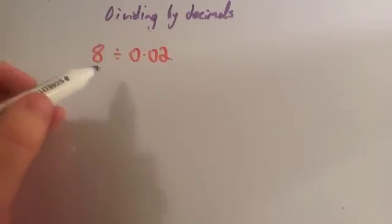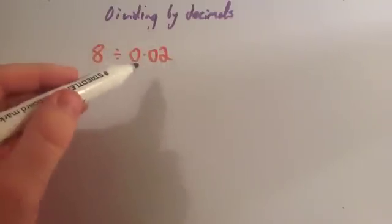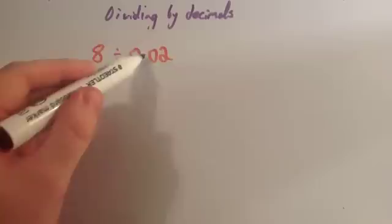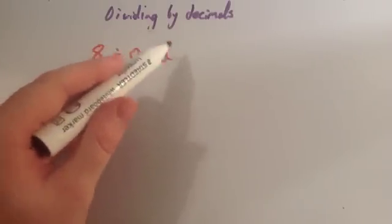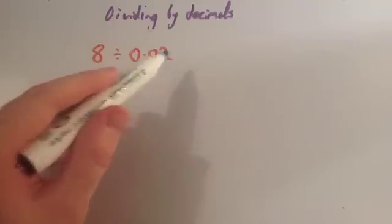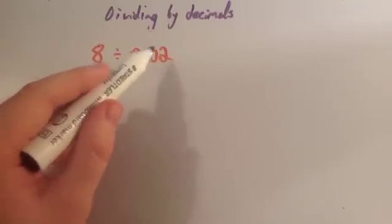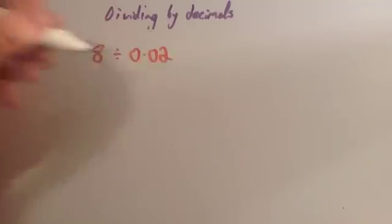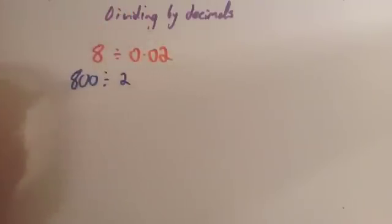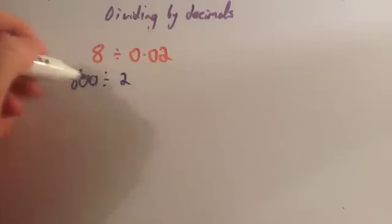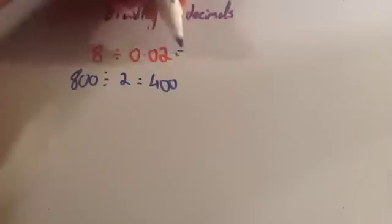We're going to do 8 divided by 0.02. You want to make this number a whole number. If we multiply it by 10, it would be 0.2. If we multiply it by 100 — moving the decimal place two places to the right — it would be 2. So we're going to multiply both 8 and 0.02 by 100, moving the decimal place two places to the right. That gives us 800 divided by 2. Well, we can just halve 800 — half of 800 is 400. So therefore our answer is 400.